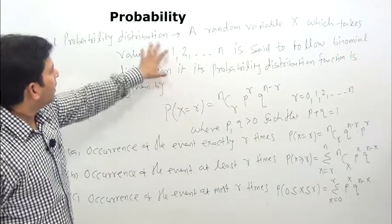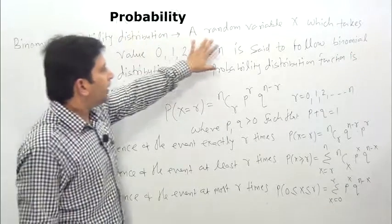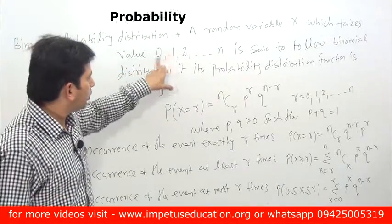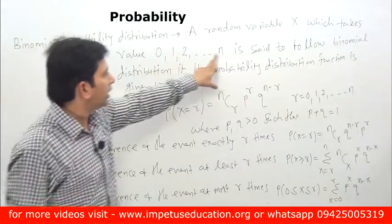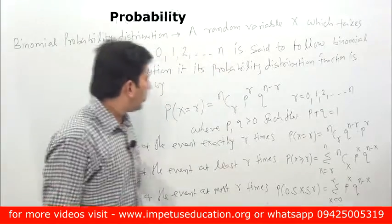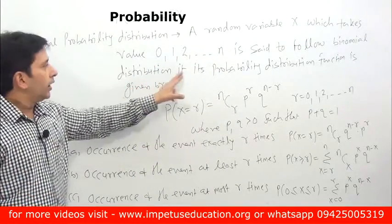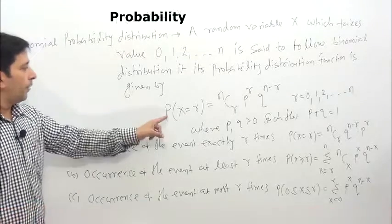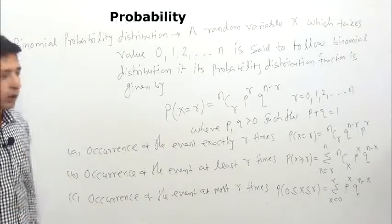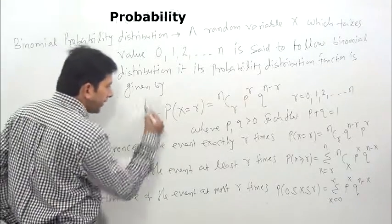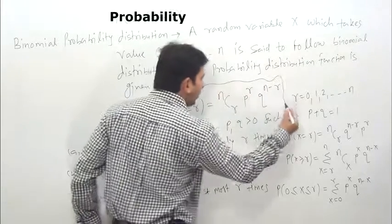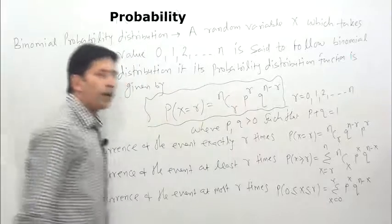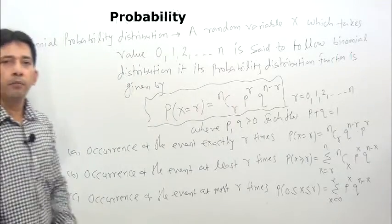What is Binomial Distribution? A random variable x which takes values 0, 1, 2, 3, up to n is said to follow Binomial Distribution if its probability distribution function is given by P(x = r) = nCr × p^r × q^(n−r).